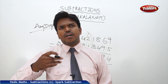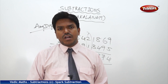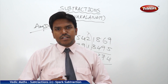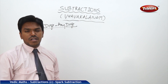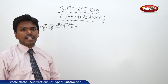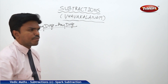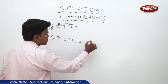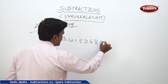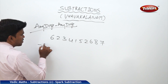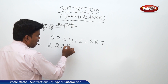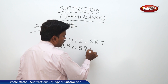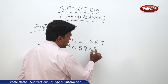Any digit minus any digit — it's your wish. We will take one more example so you get full clarity. Suppose I take 6, 2, 3, 4, 1, 5, 2, 6, 8, 7 minus 2, 2, 3, 9, 0, 5, 2, 4, 8, 9. I want to do this subtraction.